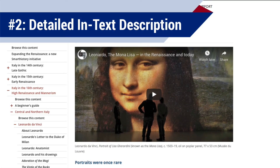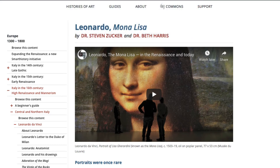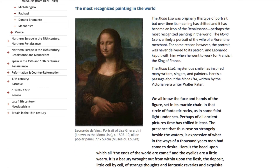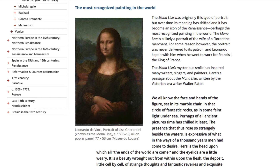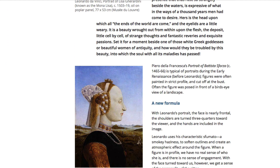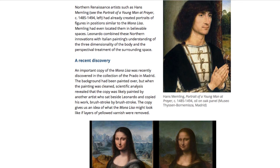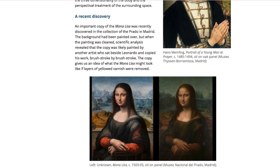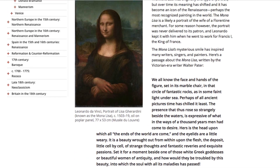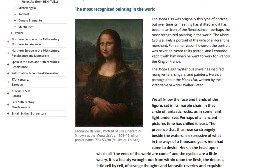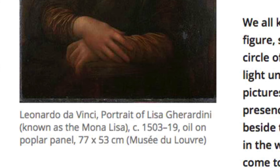Another scenario in which you don't need detailed alt text is when an image is already described in detail in the visible page text. For example, there's a picture of the Mona Lisa on a web page, but the entire content of that page is dedicated to providing contextually relevant information about the Mona Lisa. So there's no reason to repeat all of that information in the alt text. Instead, the alt text can just be some brief identifying details like the name of the painting and the artist who painted it — in this case, you can see that information in the caption underneath the image.